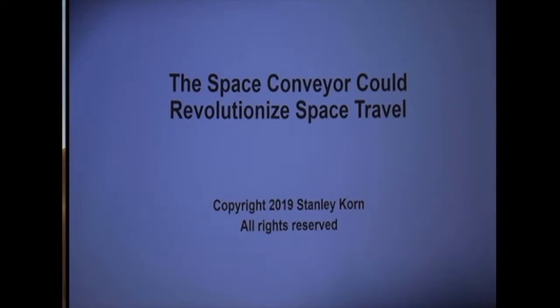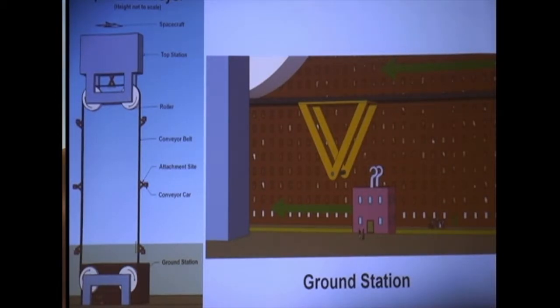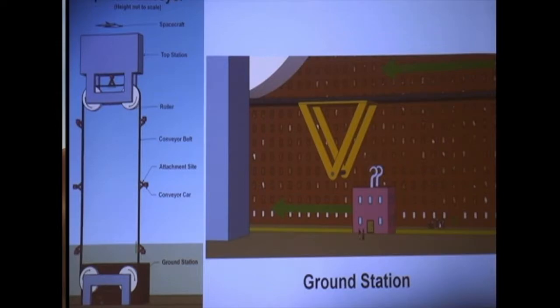The space conveyor is similar to the space elevator in that it too consists of a ground station connected to a top station some distance above the height of geostationary orbit. However, instead of being joined by a cable, the ground station is connected to the top station by a conveyor belt moving along rollers at both stations.